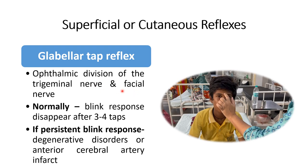For the glabellar tap reflex, we have to tap the glabella or the nasion. It will lead to a blink response. In a normal person, the blink response disappears after 3 to 4 taps. If it persists, that may indicate the child is having a degenerative disorder of the brain or an anterior cerebral artery infarct. In this video, you can see how to assess the glabellar tap reflex.